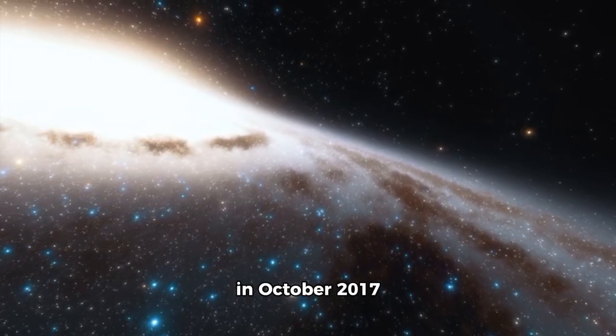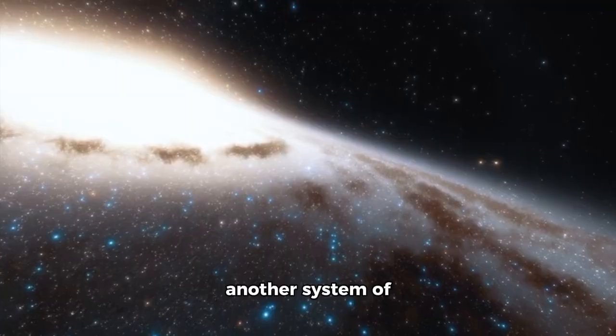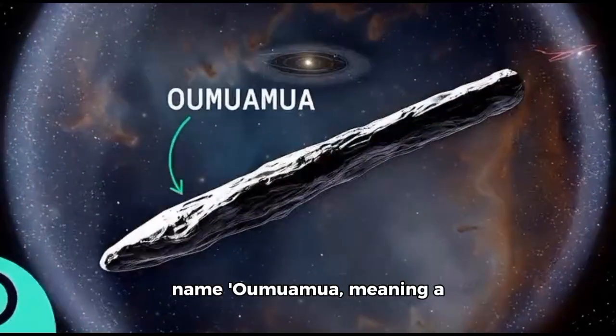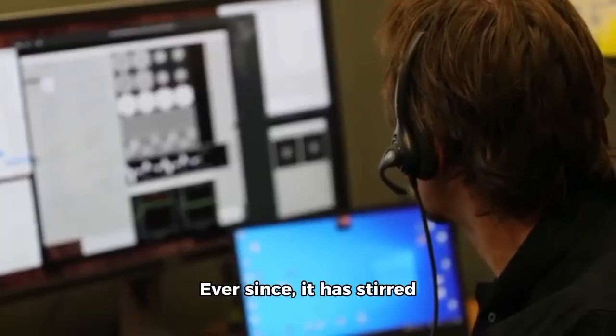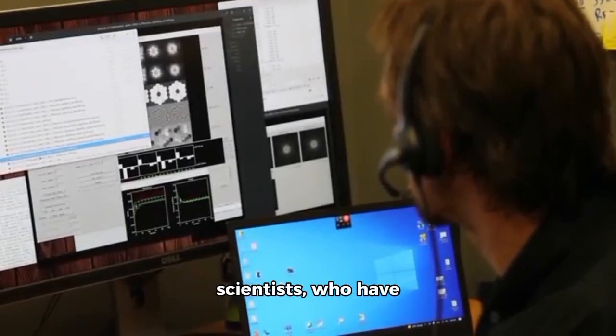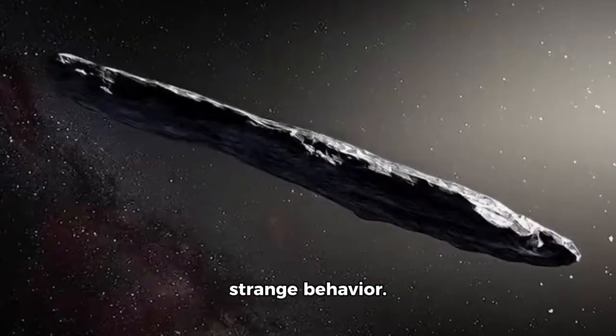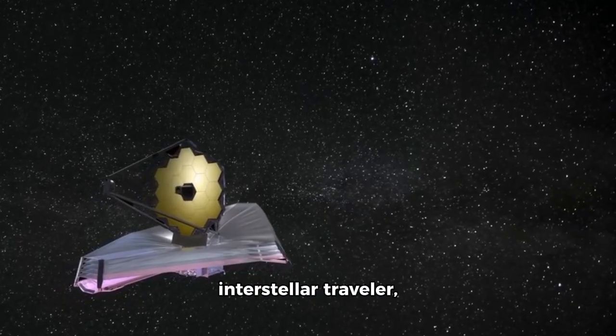Astronomers discovered in October 2017 something unusual, like a piece of another star system moving through ours. They gave it the Hawaiian name 'Oumuamua, meaning a scout or messenger. Ever since, it has stirred up debate among scientists and made people curious about its path, bizarre form, and strange behavior.